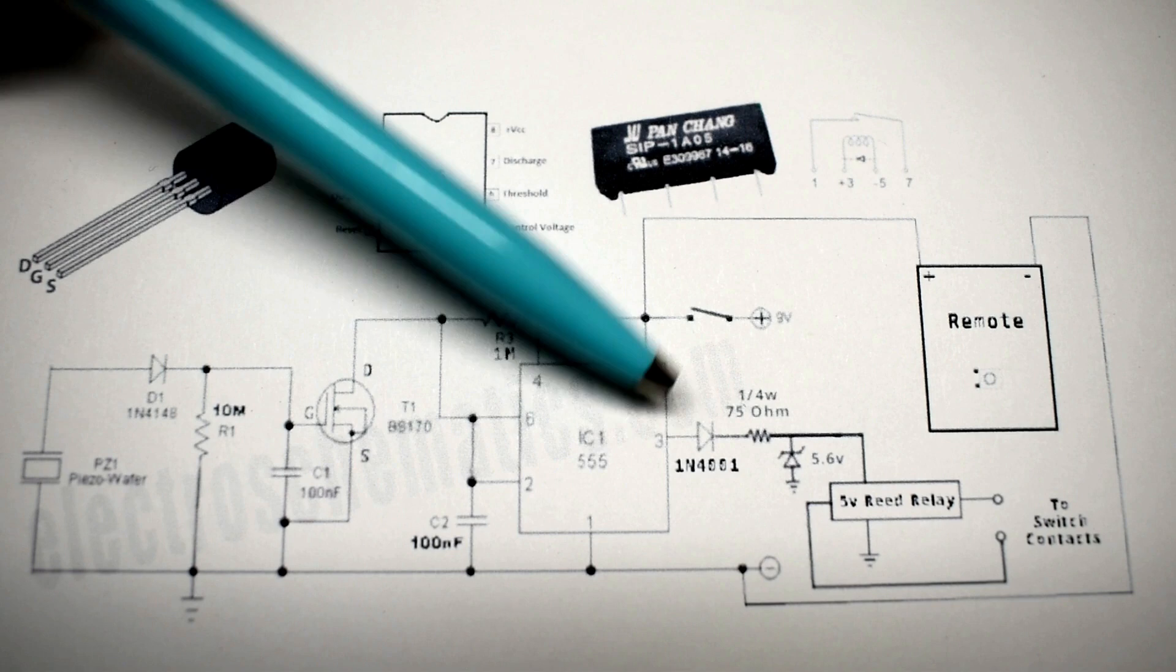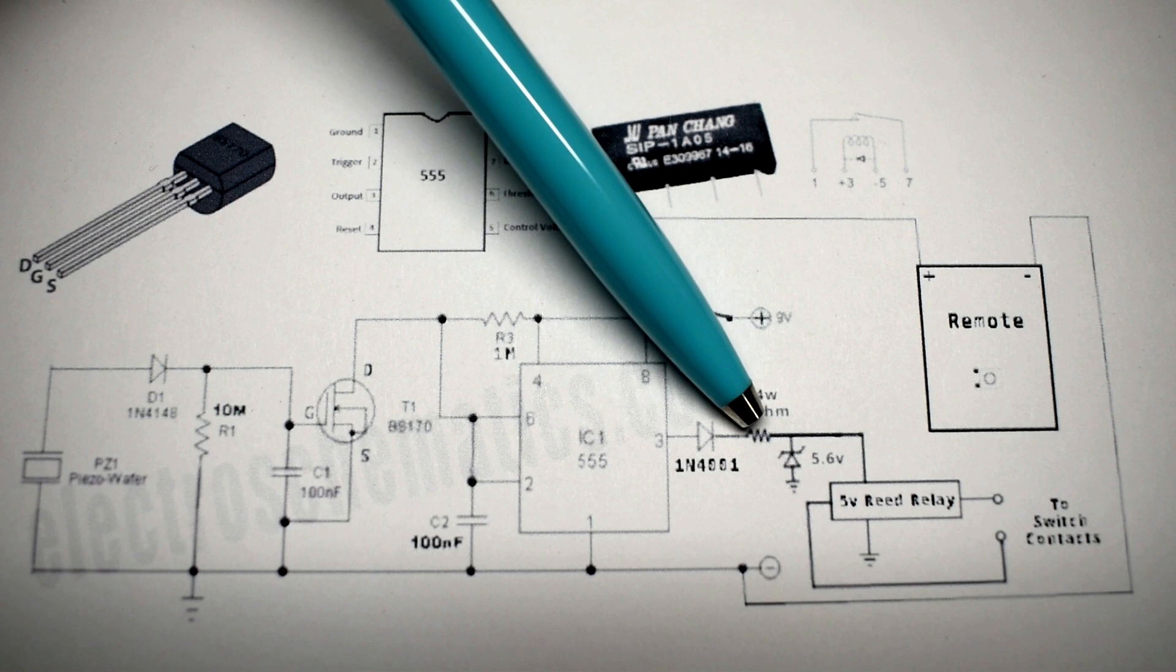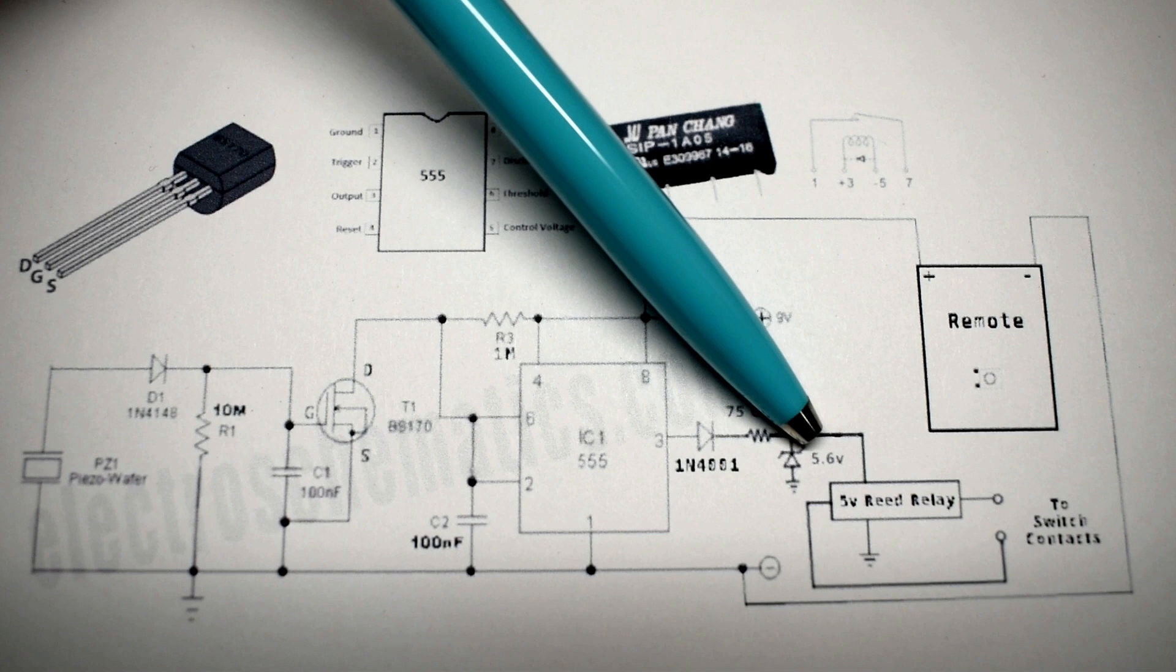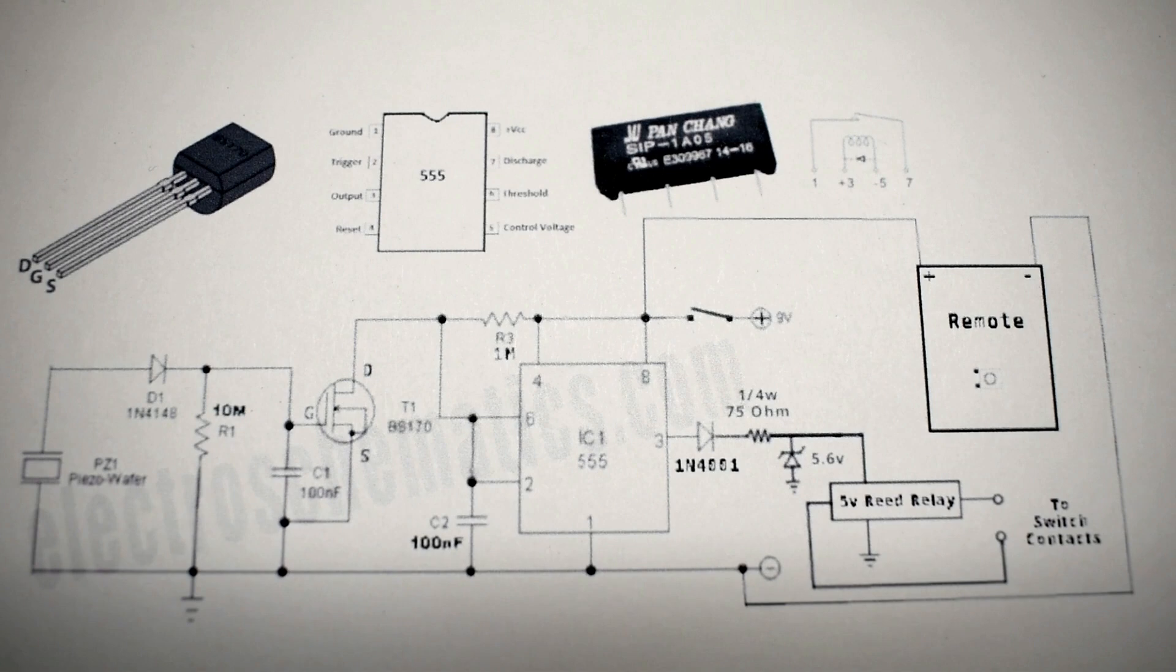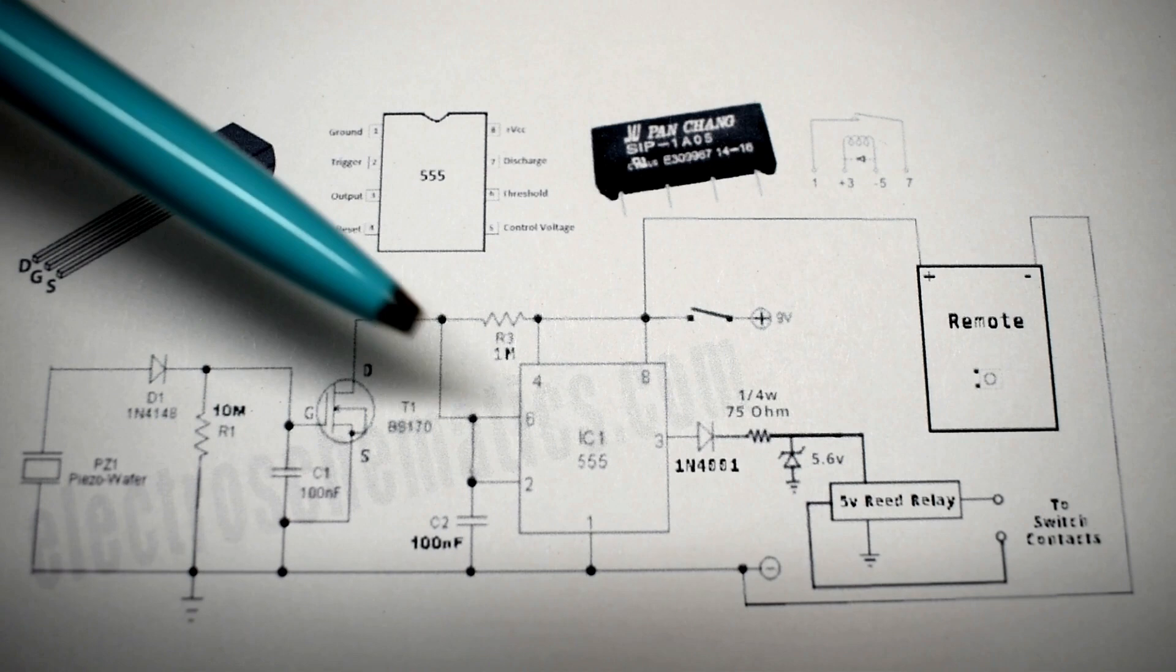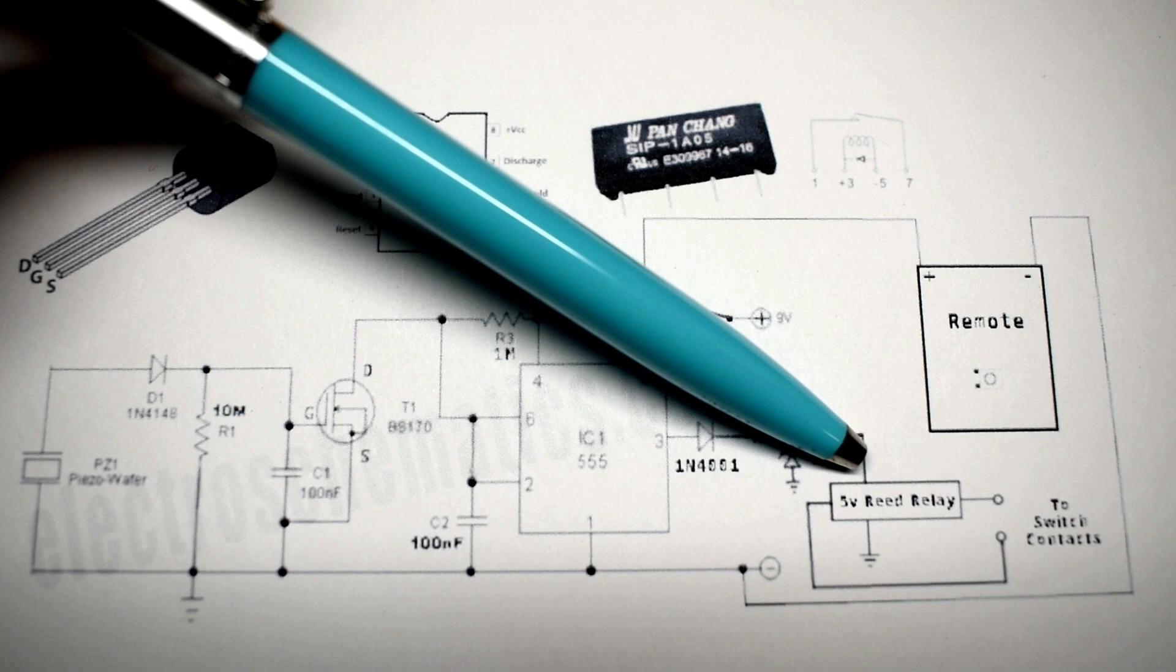When pin 3 has an output that's generated, it's going to go through this 1N4001. After this diode, you can see there's a quarter-watt 75-ohm resistor, and it connects to this Zener diode, which is a 5.6, and it's a 1-watt diode. You can get by on a 500-milliwatt. You want to make sure that the voltage is not going to be too high going into this 5-volt reed relay. Every time a detection takes place at this piezo wafer, it's going to have the output triggered, and it's going to trigger this relay.